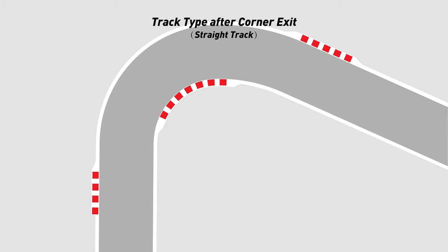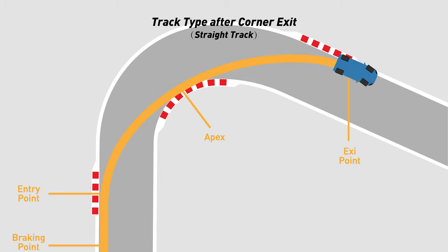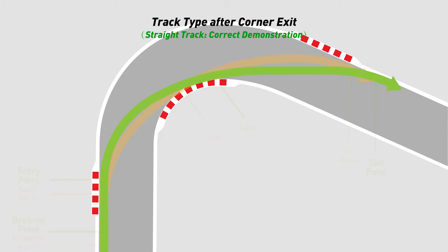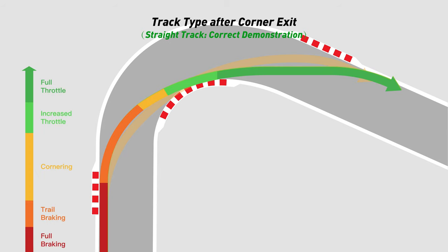Second, the racing line is determined by the type of track after the corner exit. If the corner is followed by a straight, the straight speed is usually higher and the distance is longer. The same geometric racing line, while the fastest through the corner, is not the most efficient for the straight ahead. Comparing the geometric racing line again, we can choose a later entry point and later apex to get a larger turning radius in the second half of the corner. The corresponding trail braking phase is shortened, and the increased throttle and full throttle phases will be earlier. Taking this route, the car loses some mid-corner speed, but the exit speed will be faster.